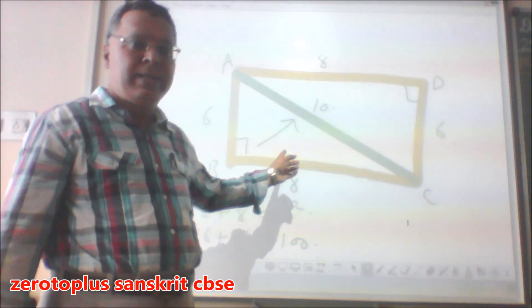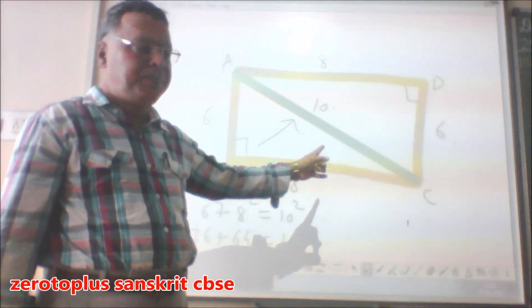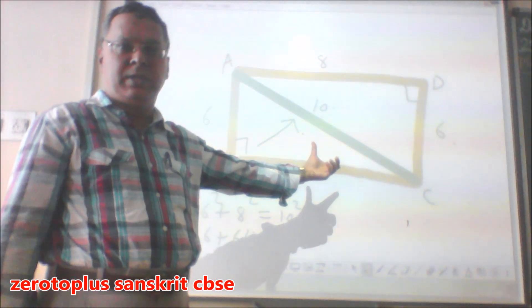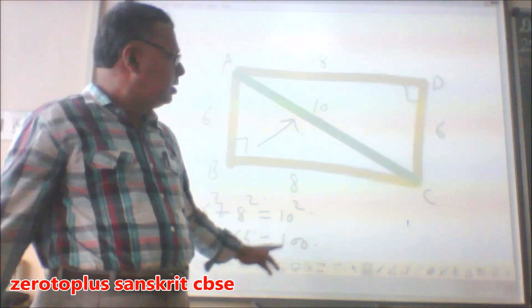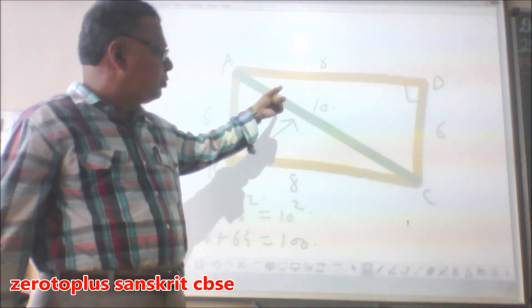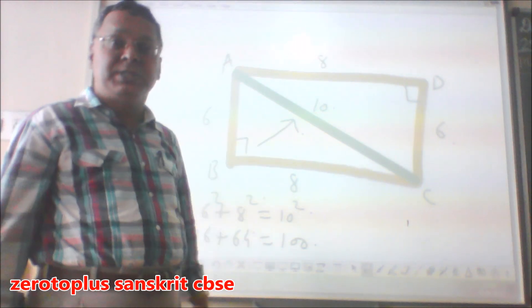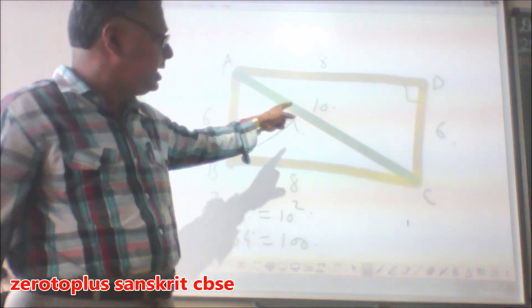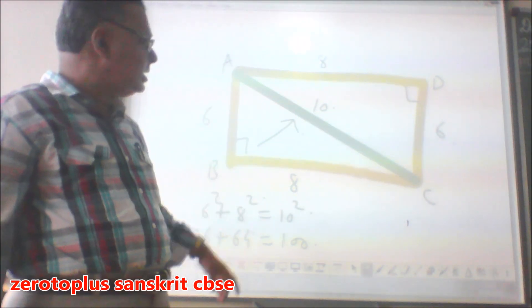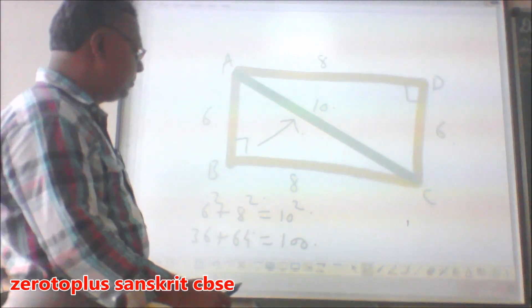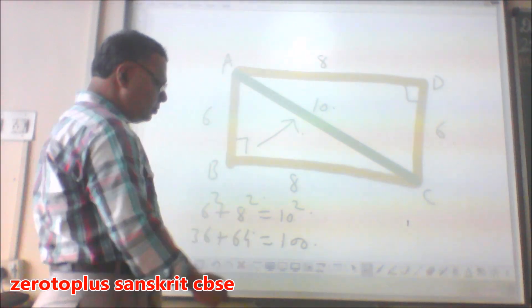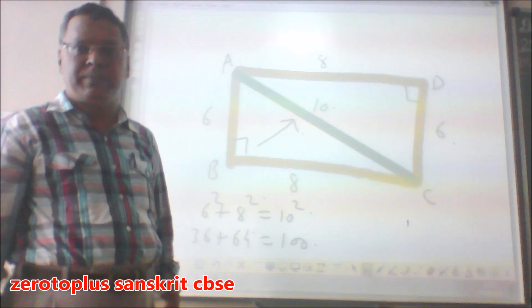Consider rectangle ABCD. The sides are: opposite sides are equal — if we consider the display board, 8 equals 8 and 6 equals 6. What is the distance between the longest side AC? The longest side is AC, that is the hypotenuse. Consider 6 square plus 8 square is equal to 10 square.